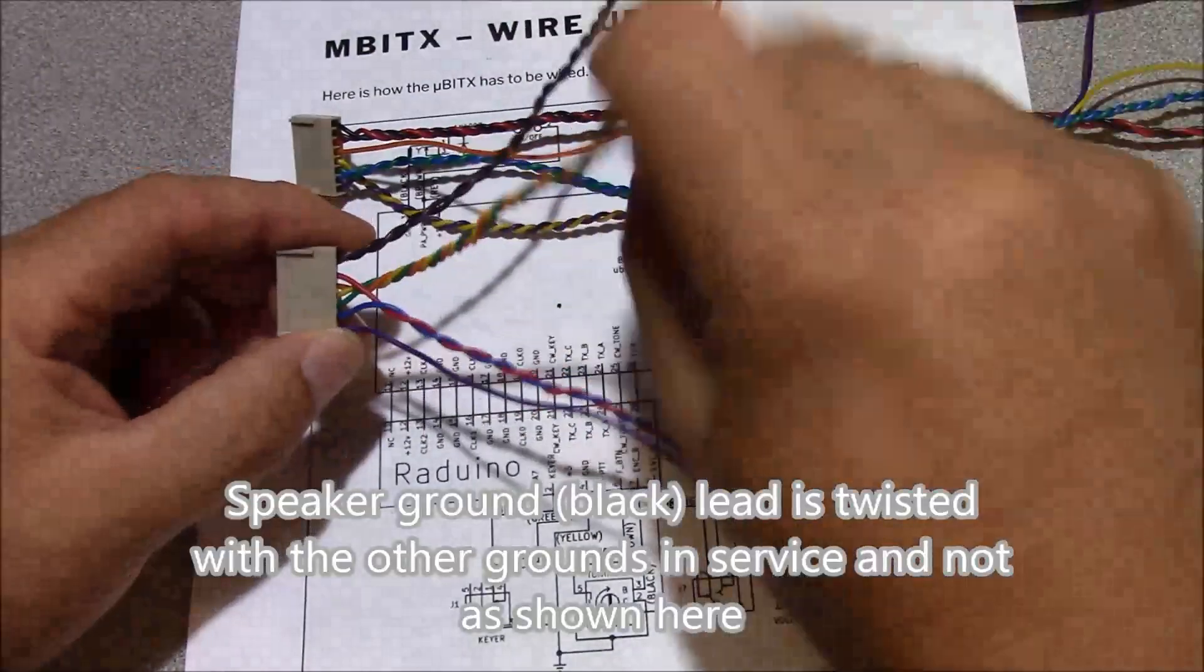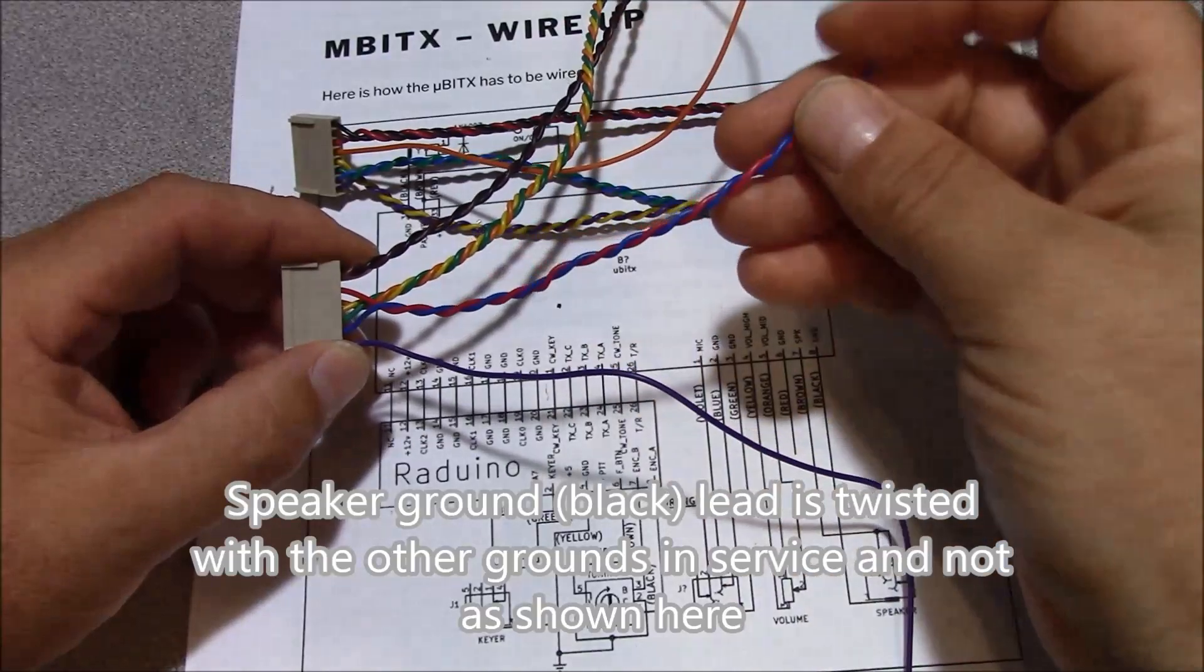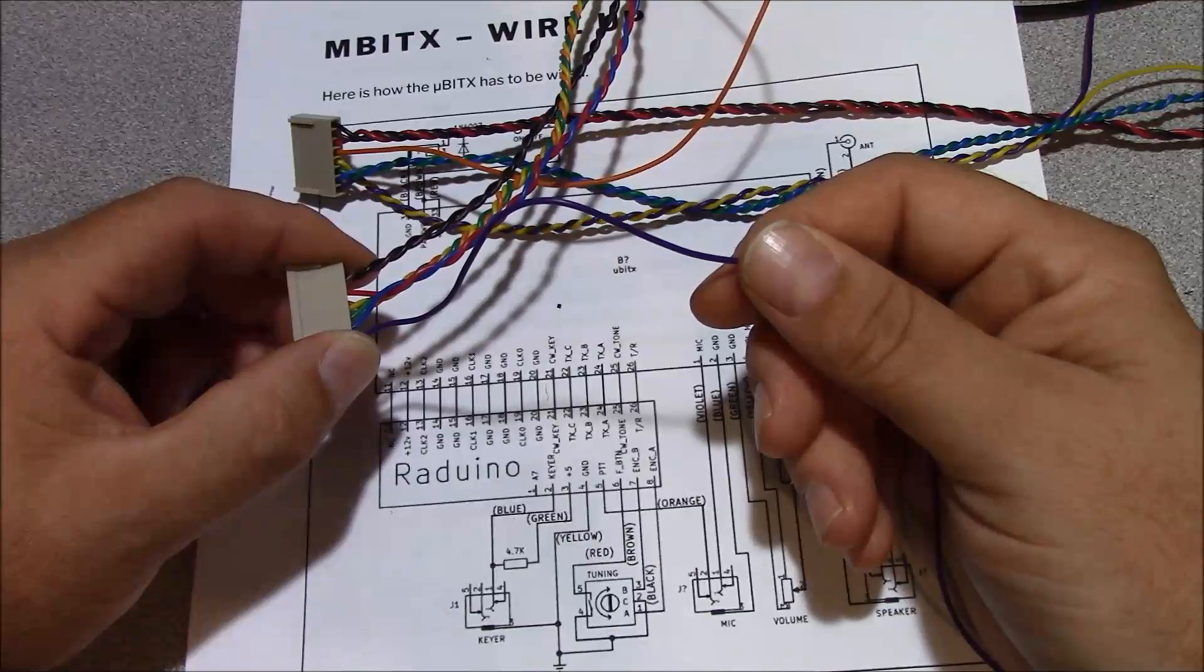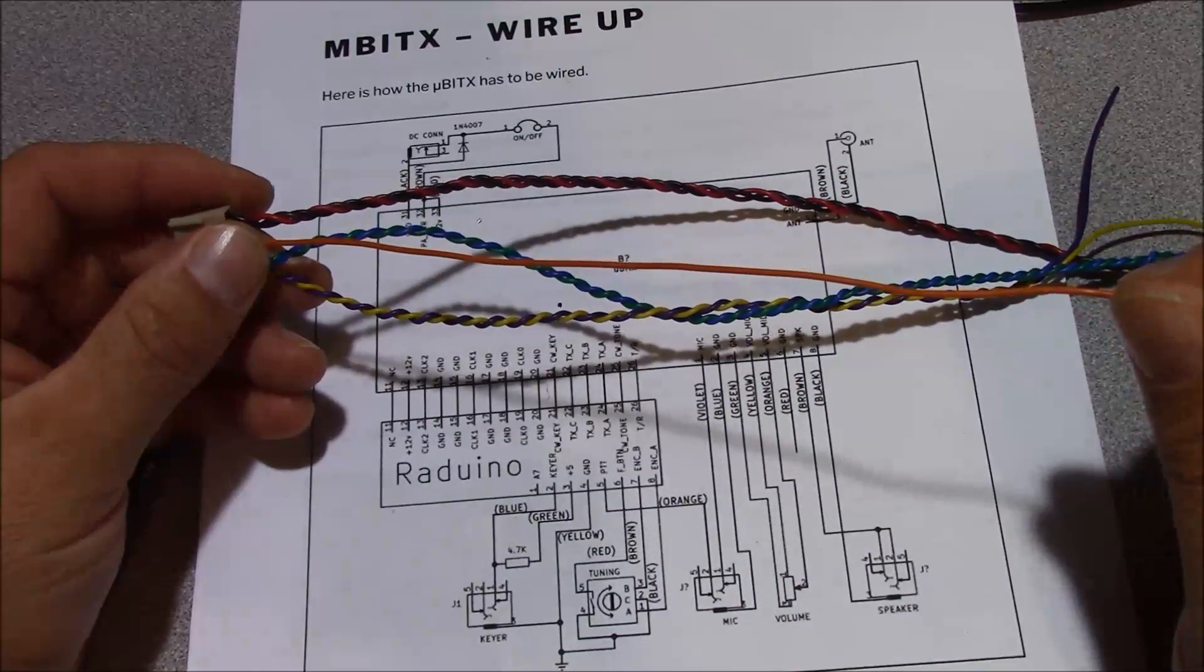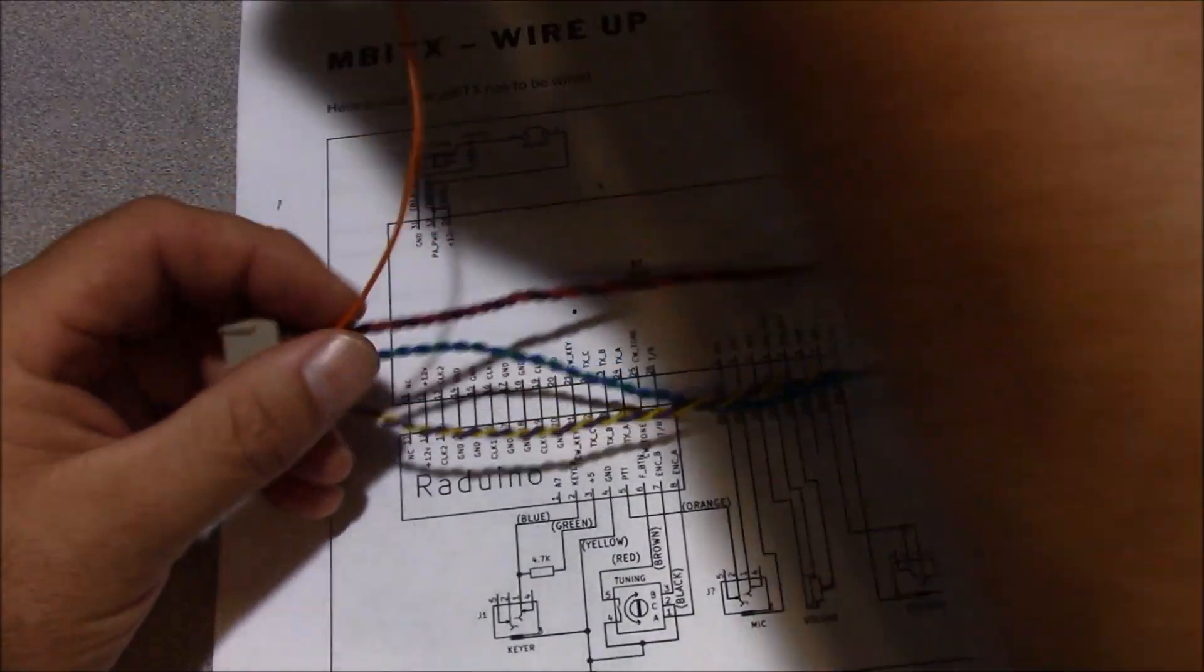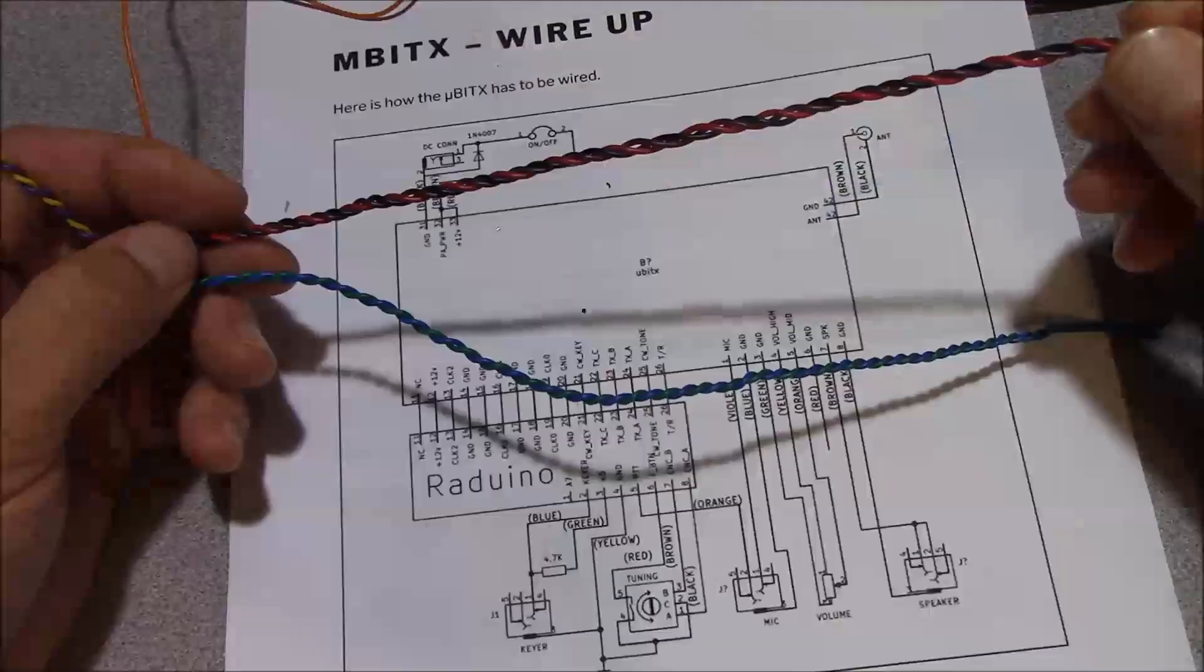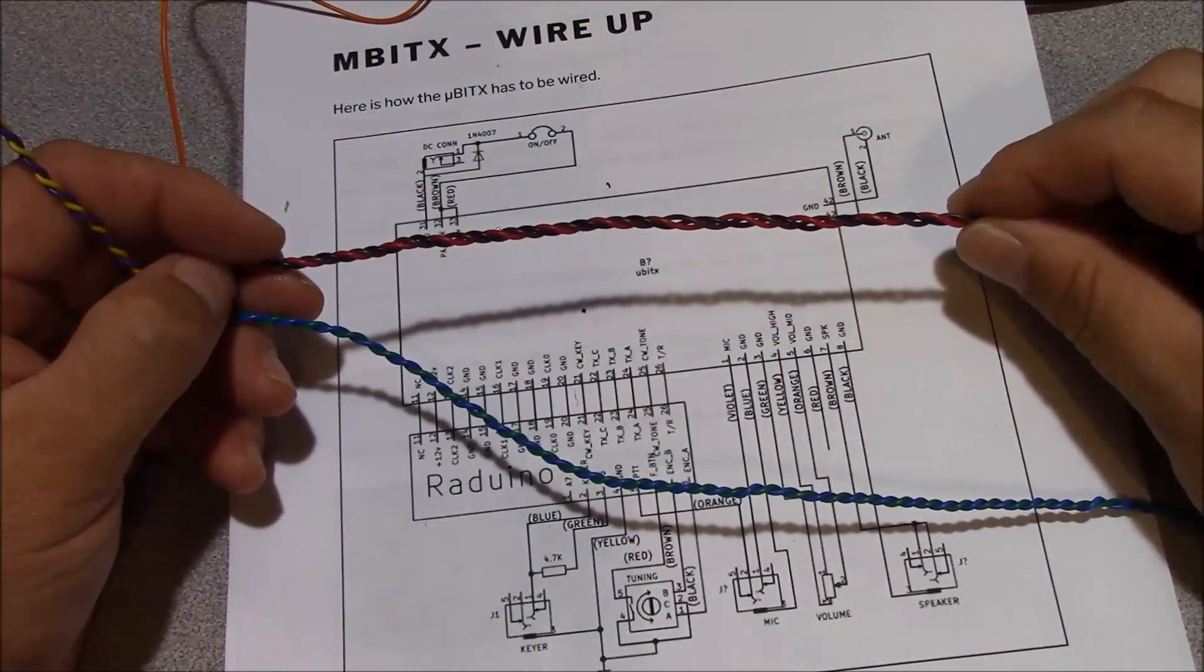For example, this goes to the speaker, this goes to my volume control, this right here are the two grounds that were superfluous, and this purple wire will go to the microphone audio. On this side, this is our push-to-talk lead right here, and these are our grounds. And this is for our CW key, and these three leads go to our encoder.